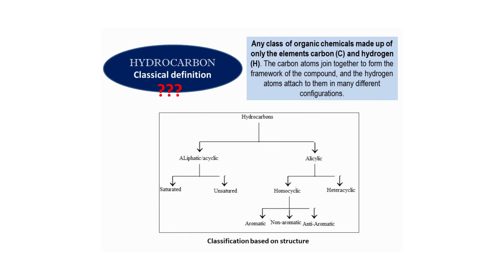In many different configurations, depending on the structure of hydrocarbons, they can be differentiated into two categories: aliphatic and alicyclic. Aliphatic hydrocarbons can be further divided into saturated and unsaturated categories, while alicyclic hydrocarbons can be homocyclic or heterocyclic. Homocyclic hydrocarbons can be further differentiated into aromatic, non-aromatic, and anti-aromatic hydrocarbons.